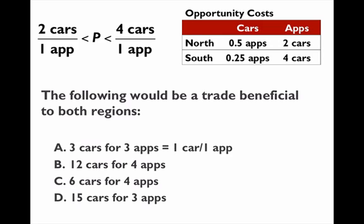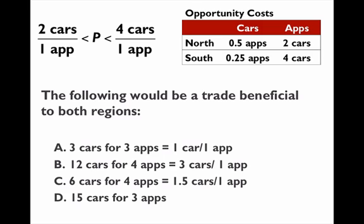Looking at the four trade options: three cars for three apps is one car per app — that wouldn't benefit the North. Twelve cars for four apps works out to three cars per app, which falls between two and four — that benefits both countries. Six cars for four apps is 1.5 cars per app, which doesn't benefit the North since they're getting less than two. And 50 cars for three apps is about five cars per app, which doesn't benefit the South since they'd be paying more than it costs them to produce. So the answer is B: 12 cars for four apps, at a rate of three cars per app.